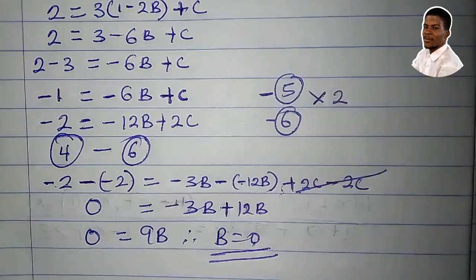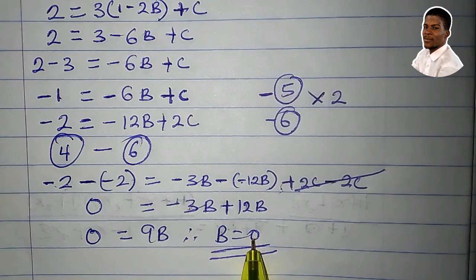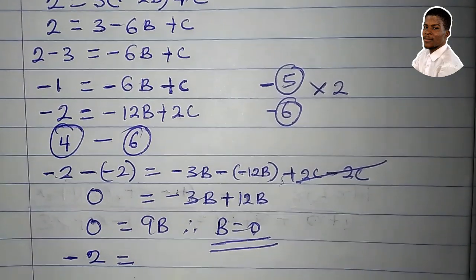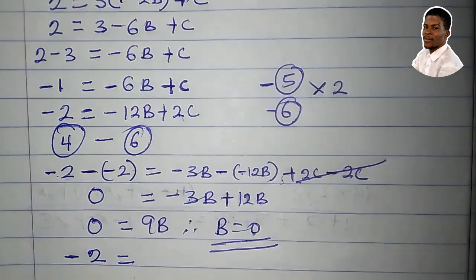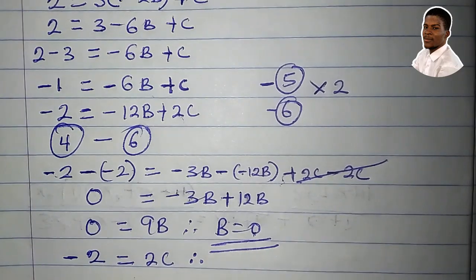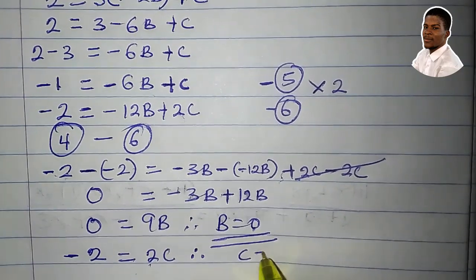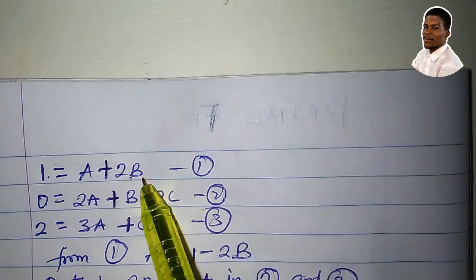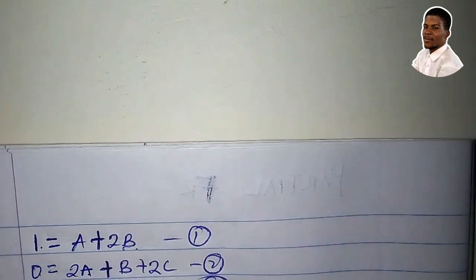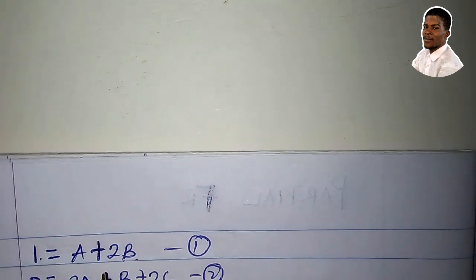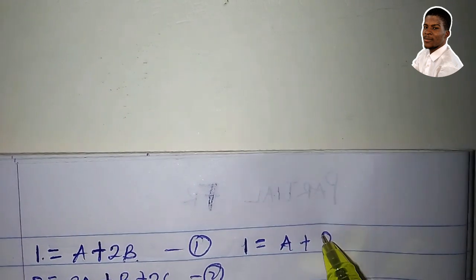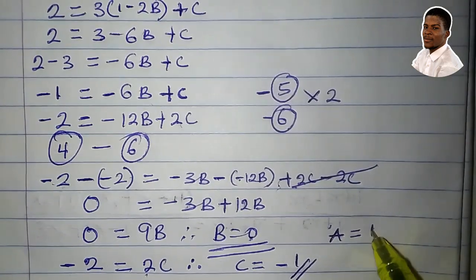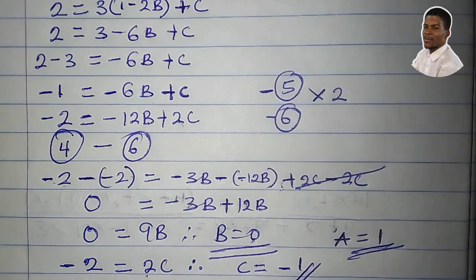Now let's get the value of c. Plugging b = 0 into equation 6: −2 = −12(0) + 2c = 2c. Dividing both sides by 2, c = −1. Now for a: plugging b = 0 into equation 1: 1 = a + 2(0), so a = 1. So our constants are a = 1, b = 0, and c = −1.